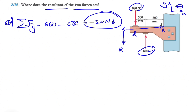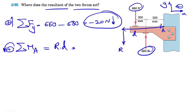The way we're going to find that is that the sum of all moments about point A has to be equal to the moment of R in this direction. As always, we're going to call counterclockwise positive. So the moment of R would be R times D, and this has to be equal to the moment of each of these two forces about point A.